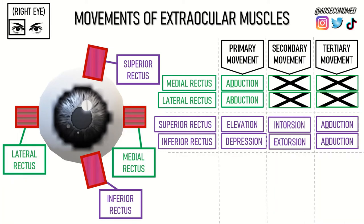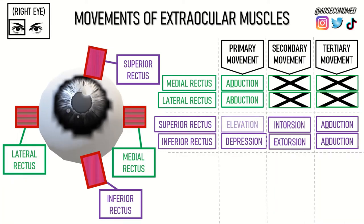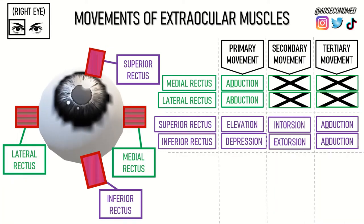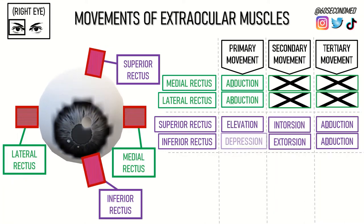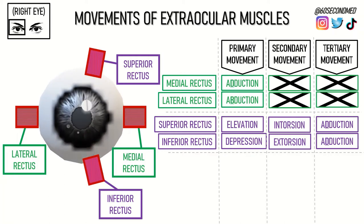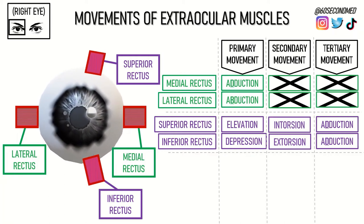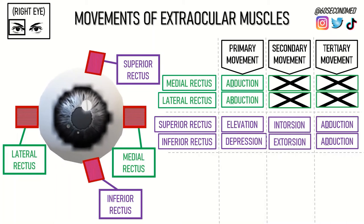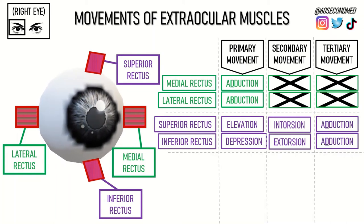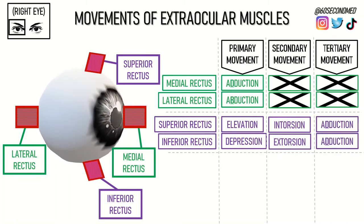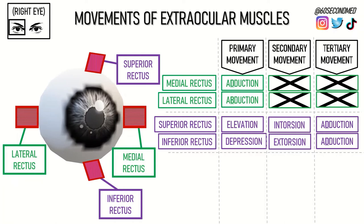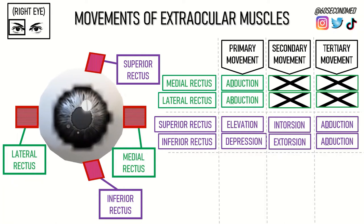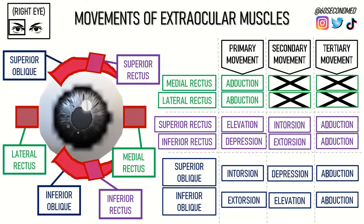For the superior and inferior recti, the primary movement for the superior rectus is to elevate the eye, and for the inferior rectus to depress the eye. The secondary movement for the superior is to intort, and for the inferior rectus to extort the eyeball. Both recti have a tertiary movement to adduct the eyeball, due to their slightly more medial attachments.